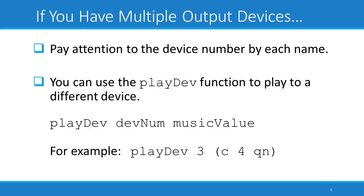Typically, Euterpia's play function sends output to the device that is numbered 0. If that isn't the device that you want to play to, you may need to select a different device. You can use the playdev function to accomplish this. Pay attention to the device number in front of each device name when you use the devices function. This is the number that you need to supply to the playdev function. The format is playdev, followed by the device number, followed by the music value that you want to play, such as C4 quarter note.